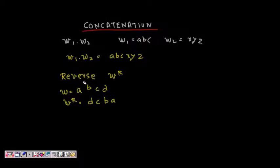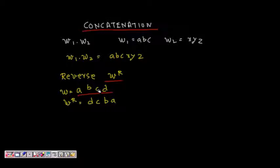Another operation is the reverse of a string. If w is 'abcd', the reverse is formed by taking the last character first, giving 'dcba'.